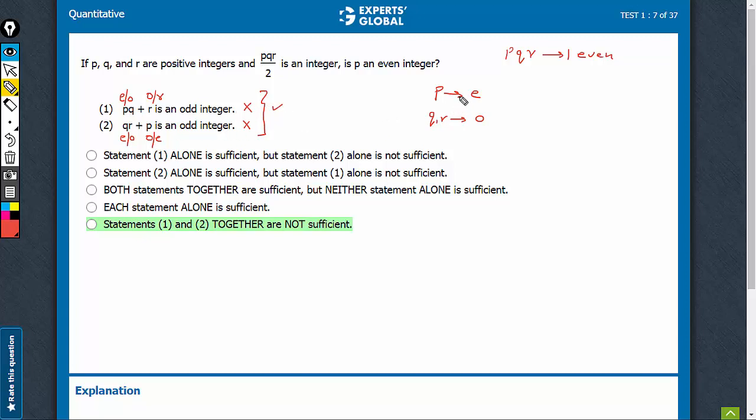And now let's put the same values here. QR would be odd plus P is even. So odd plus even would be odd. So this is also being satisfied for these set of values. So this is suggesting that, yes, P is even.